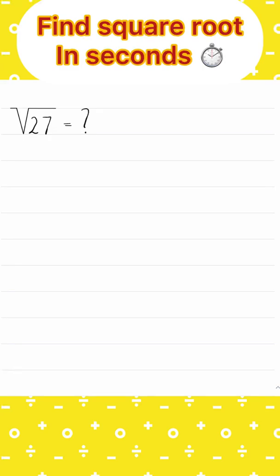There is a very easy and quick way to find the square roots of non-perfect squares within seconds. Let's say we want to find the square root of the number 27. The closest square to 27 is the number 25, which is also the square of number 5.